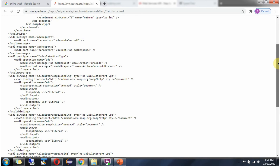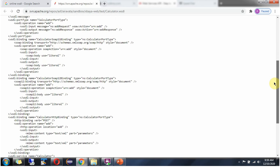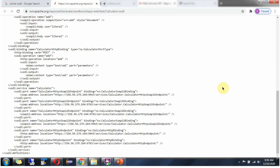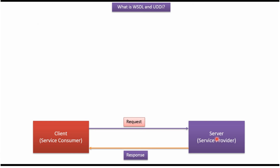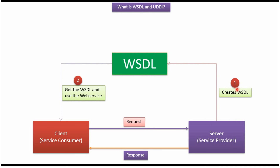It also describes what different requests it supports, what the different request parameters are, and what the different responses are — everything is defined here. To expose web services, the service provider creates a WSDL, and the service consumer gets the WSDL and uses it to consume the web service.